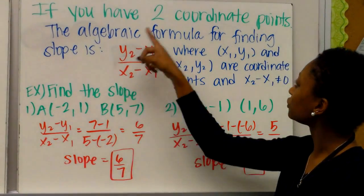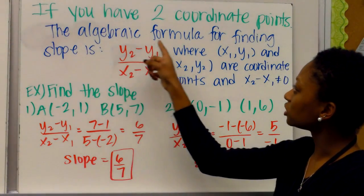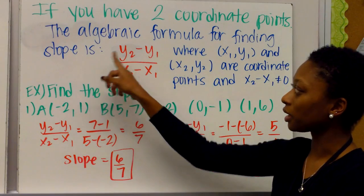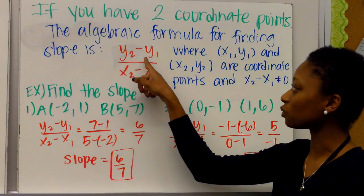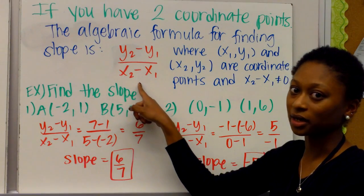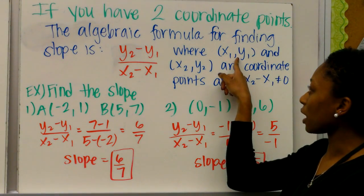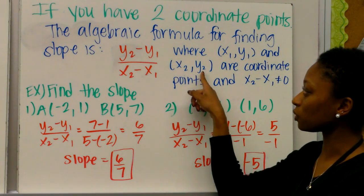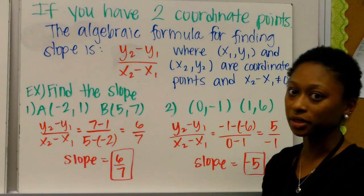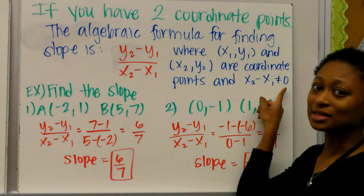So if you have two coordinate points and you want to find the slope, the algebraic formula for finding slope is y2 minus y1. Again, that's the change in y, over x2 minus x1. So the change in x.